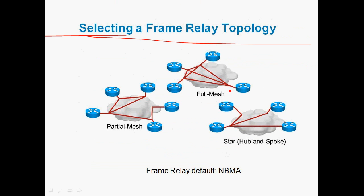Frame Relay Topologies: there are three types. In Full Mesh topology, all devices are connected to all other devices — cost is high and redundancy occurs. In Partial Mesh topology, some devices are connected to some others, and cost is less expensive than Full Mesh. In Star (Hub and Spoke) topology, one device is the Hub and the rest are Spokes — cost is the least expensive of all three. By default, Frame Relay uses a Non-Broadcast Multi-Access (NBMA) network.